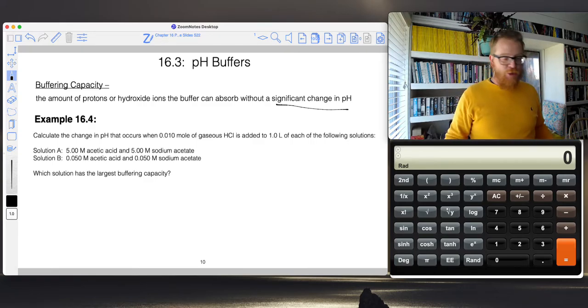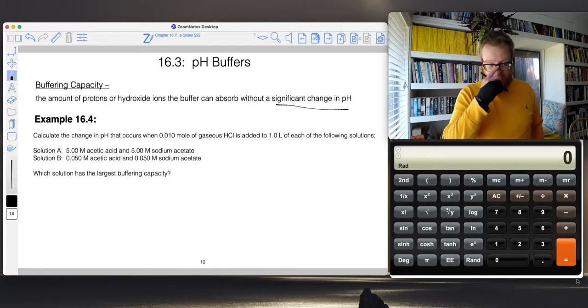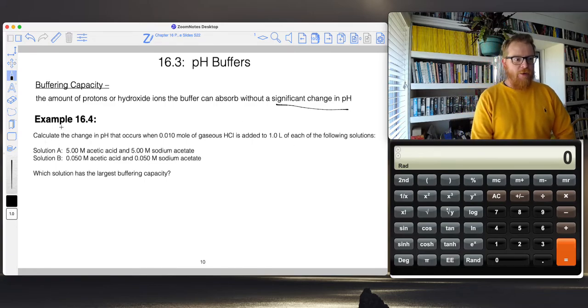I'm going to approach this from two different ways, one from a conceptual way and the other from actually calculating it. Here's the problem: calculate the change in pH that occurs when 0.01 mole of gaseous HCl is added to one liter of each of the following solutions.